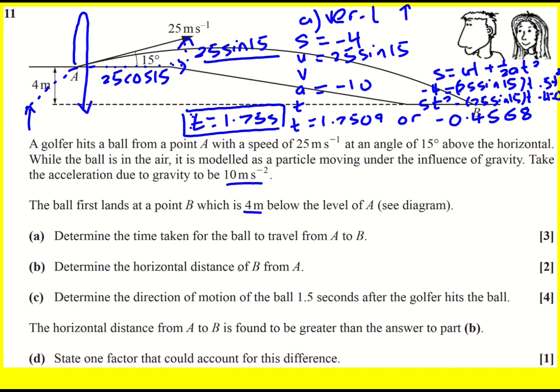We're then asked to determine the horizontal distance of B from A. So now I can do the same sort of thing, but look at SUVAT horizontally. Apply it to the right as positive. What we get is the acceleration is zero. So the initial velocity is 25 cos 15, and the final velocity is that as well. But the time is going to be this time from before, 1.7509.